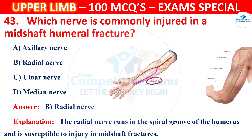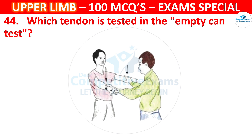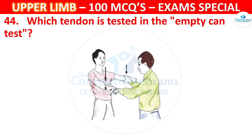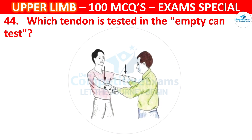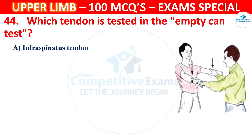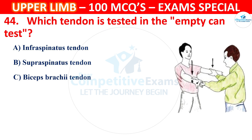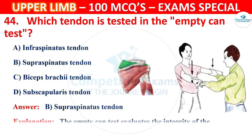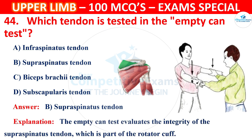Question number 44: Which tendon is tested in the empty can test? Options: infraspinatus tendon, supraspinatus tendon, biceps brachii tendon, or subscapularis tendon. The correct answer is B, supraspinatus tendon. The empty can test evaluates the integrity of the supraspinatus tendon, which is part of the rotator cuff.